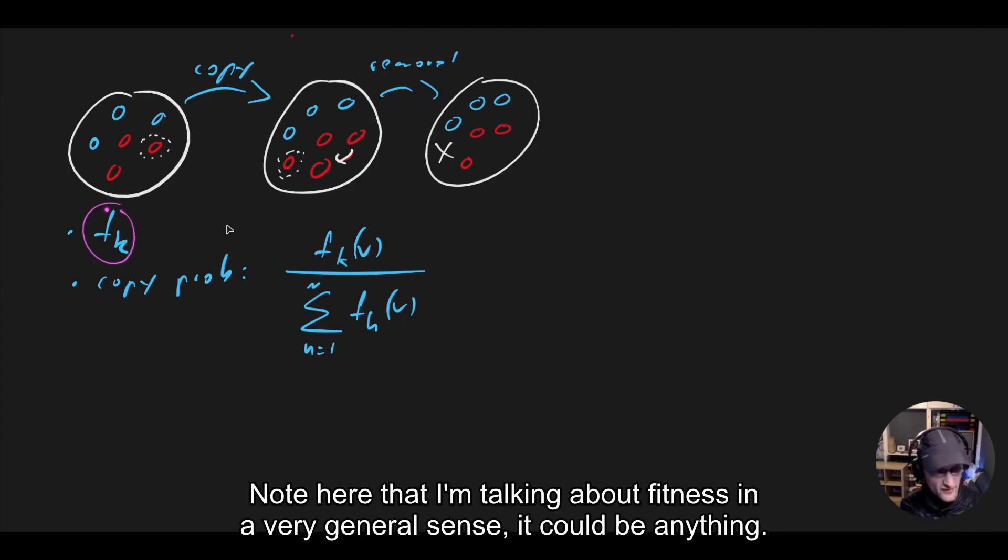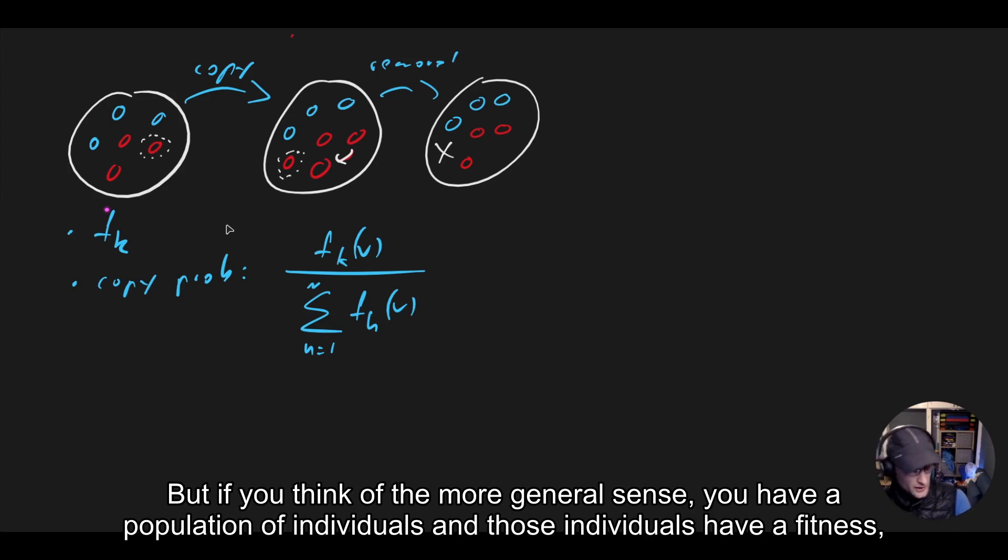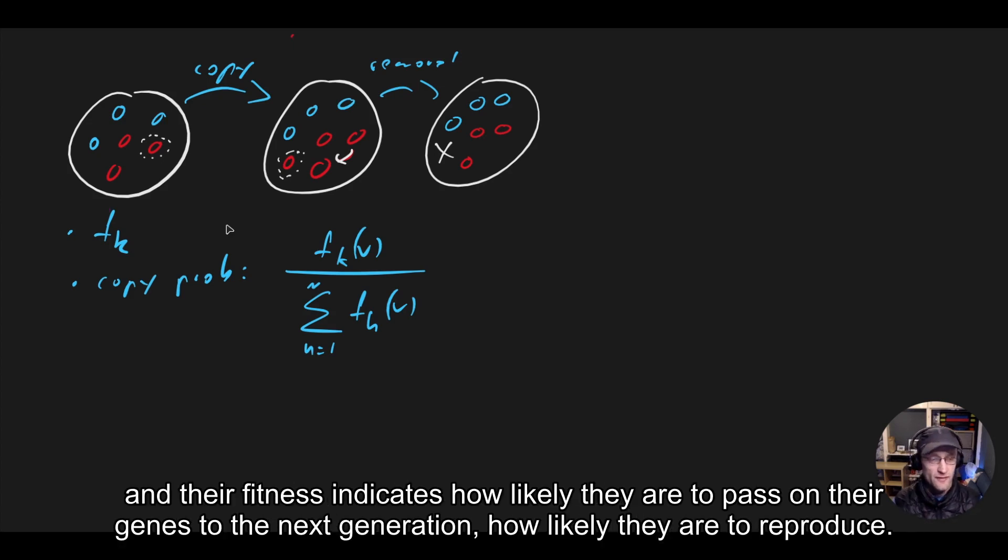Note here that I'm talking about fitness in a very general sense. It could be anything. What we're going to be doing is fitness on games, where those fitnesses depend on the interactions between everyone. But if you think of the more general sense, you have a population of individuals, and those individuals have a fitness, and their fitness indicates how likely they are to pass on their genes to the next generation, how likely they are to reproduce.